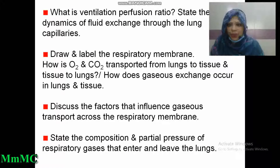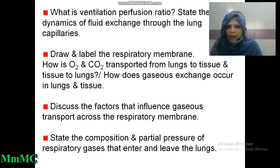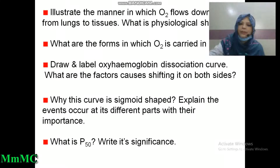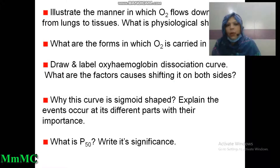What is ventilation-perfusion ratio? State the dynamics of fluid exchange through the lung capillaries. Draw the respiratory membrane. How are oxygen and carbon dioxide transported from lungs to tissues and tissues to lungs? Discuss the factors that influence gas transport across the respiratory membrane. State the composition and partial pressure of respiratory gases that enter and leave the lungs. Illustrate how oxygen flows down from lungs to tissues. What is physiological shunt? What are the forms in which oxygen is carried in blood? Draw the oxyhemoglobin dissociation curve. What factors cause shifting on both sides? Why is this curve sigmoid-shaped? Explain events at its different parts with their importance. What is P50 and its significance?